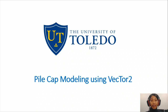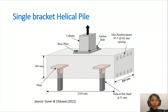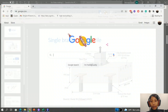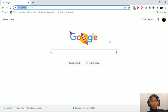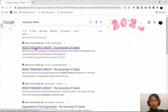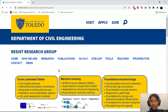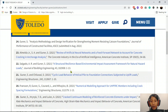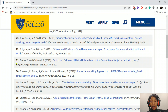Welcome to this channel. This video is on pile cap modeling using a finite element software called Vector2. For this example, we are going to model a pile cap with helical piles embedded in it. This example is taken from a paper by Kuner and Chilwal, which can be downloaded from a link from the research group of University of Toledo. In the publications, we can download paper number 21.